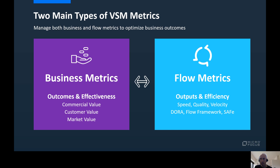In addition, there are flow metrics, which measure the value stream outputs — in other words, how efficient your value delivery is. This includes speed as measured by cycle time or lead time, quality such as open defect rate, test coverage, escape defects, and velocity such as work in progress. There are a variety of frameworks, including the DevOps Research and Assessment, the Flow Framework, the Scaled Agile Framework, and others that propose flow-related metrics you can leverage.